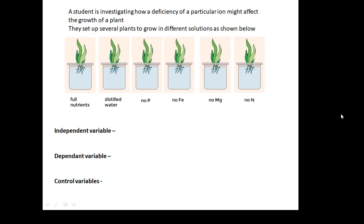Consider this. A student is investigating how a deficiency of a particular ion might affect the growth of a plant. They set up several plants to grow in different solutions, as shown below. And you'll see that one of them has got lots of full nutrients. One of them doesn't have any. It's just distilled water. And then other ones are lacking certain nutrients. There is a deficiency. So what is our independent variable? What is our dependent variable? What are our control variables? Have a think, maybe. Pause the video and write down your ideas.